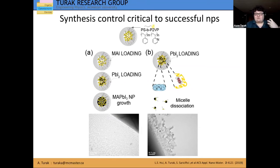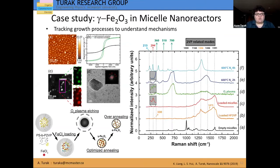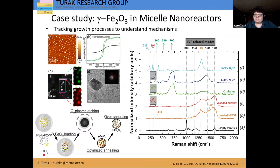A good case study for how important synthesis control is, or understanding the mechanisms that are occurring, is something like iron oxide. We produced magnetic gamma phase iron(II) oxide, which is a very interesting magnetic material that has a very high Curie temperature and is desirable in magnetic imaging or data storage. We were able to produce really very nice single crystalline nanoparticles using this approach, where by tracking each point in the synthesis method using Raman spectroscopy in particular, we were able to see where the optimized point was to get the kind of properties we wanted — these really pure 100% gamma phase particles.